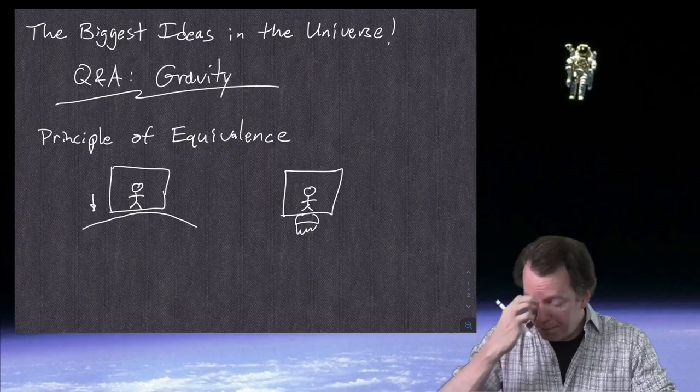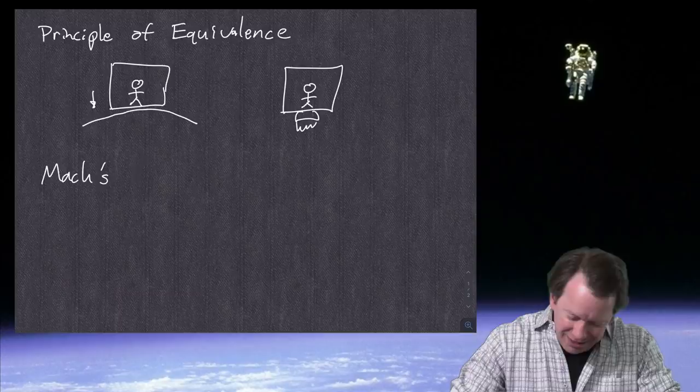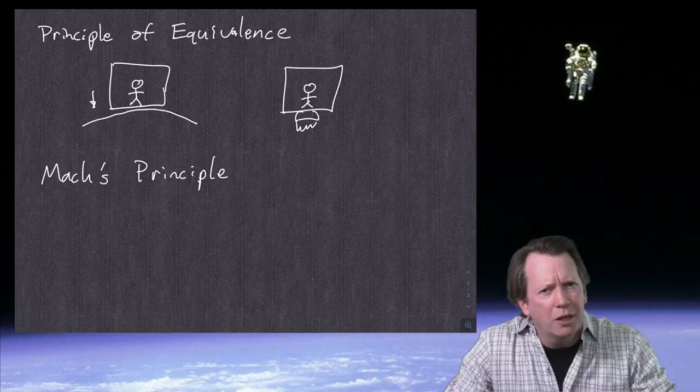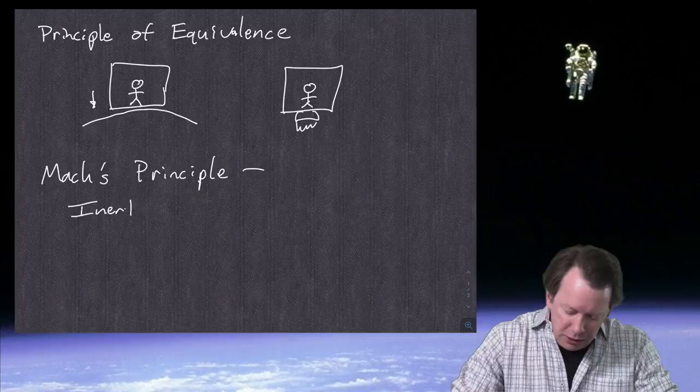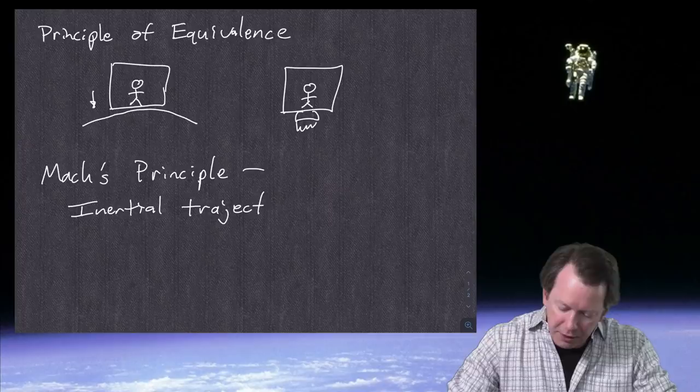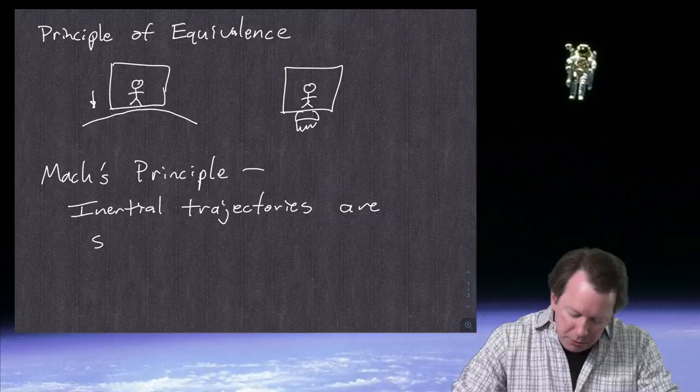Another thing like that is Mach's principle — similar, but much worse. I have difficulty even stating it coherently, because it wasn't very coherent. The idea behind Mach's principle is that inertial trajectories, which are special in relativity, are somehow set by matter in the universe.